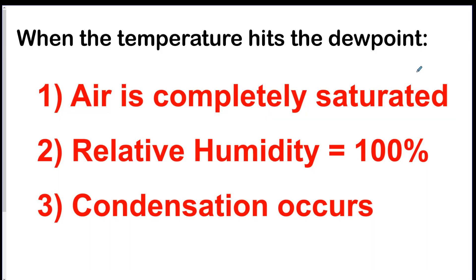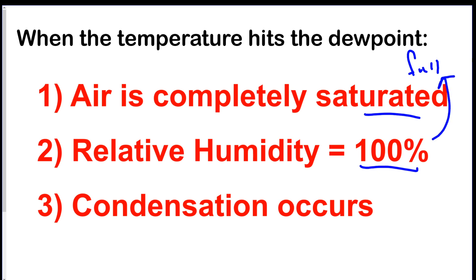There are three things that happen when the air temperature actually hits the dew point temperature. Number one, the air is now completely saturated — saturated means full. The relative humidity is 100%, meaning it is full. And if it's full and you continue to add water, there's going to be no room, so the water vapor ends up condensing into a liquid.